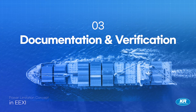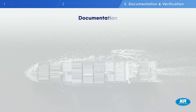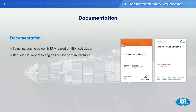Now let's explain the procedure for document approval and verification of EPL. First, the shipping company should calculate the attained and target EEXI to determine whether power limiting is required. If the attained EEXI is higher than the target, find the appropriate power and RPM using the EEXI equation until the attained EEXI falls below the EEXI target. Second, request an EPL report from the engine licensor or manufacturer based on the power and RPM determined by the EEXI calculation.